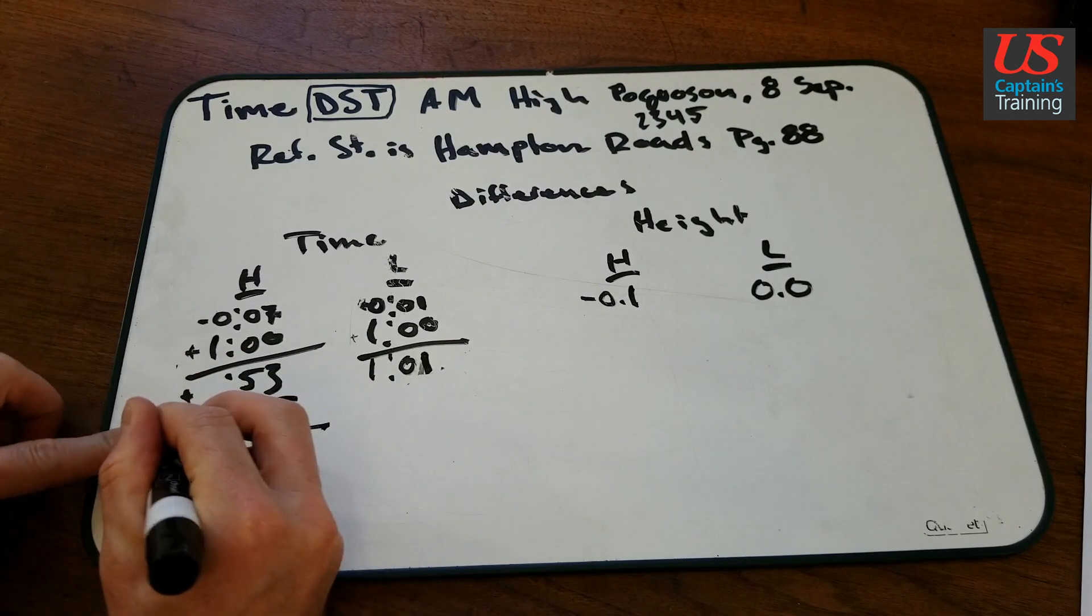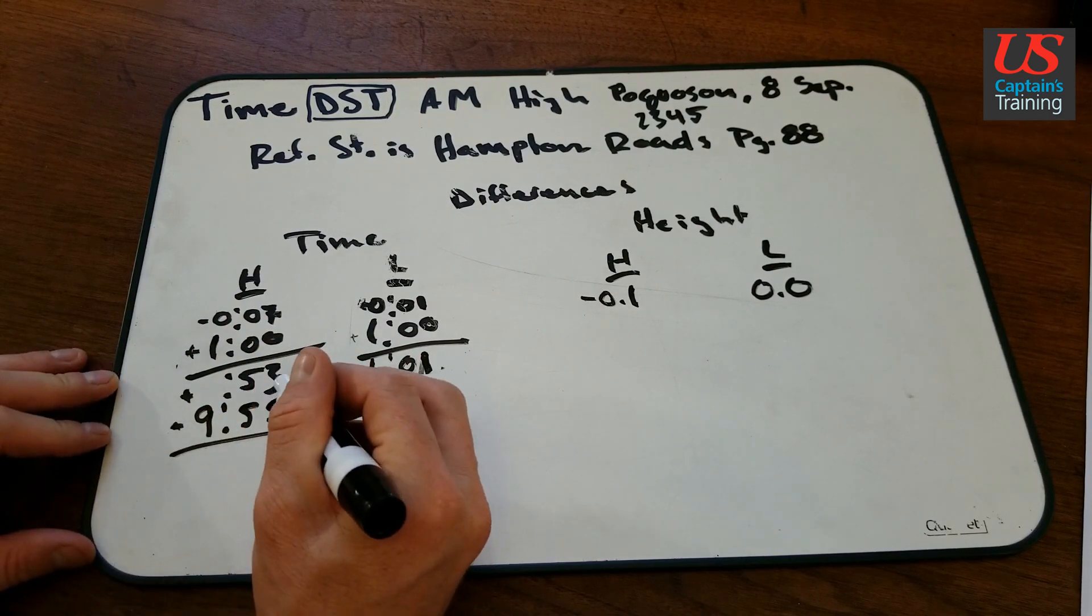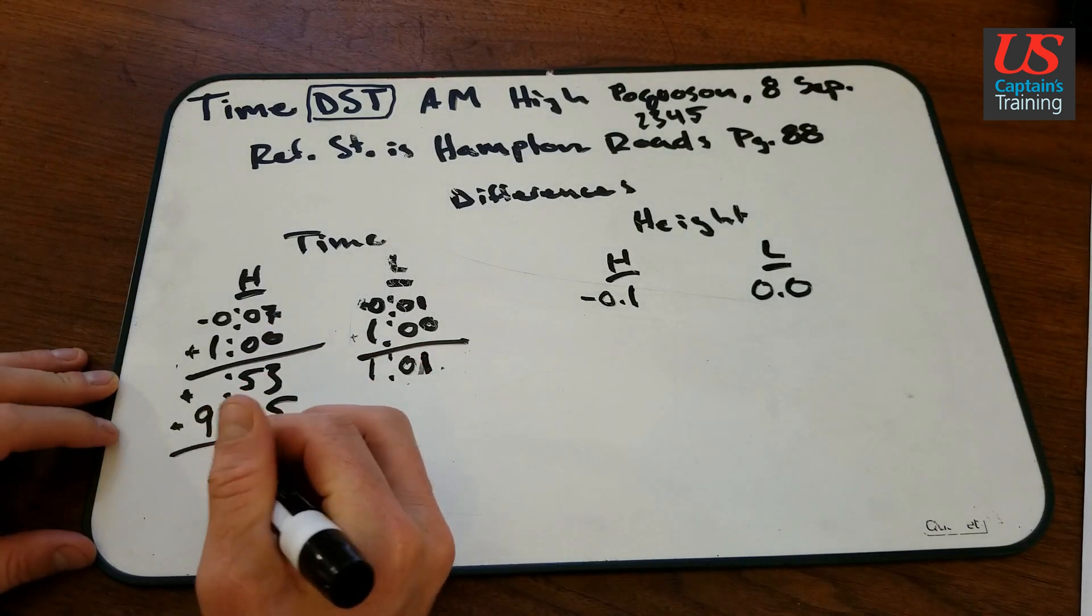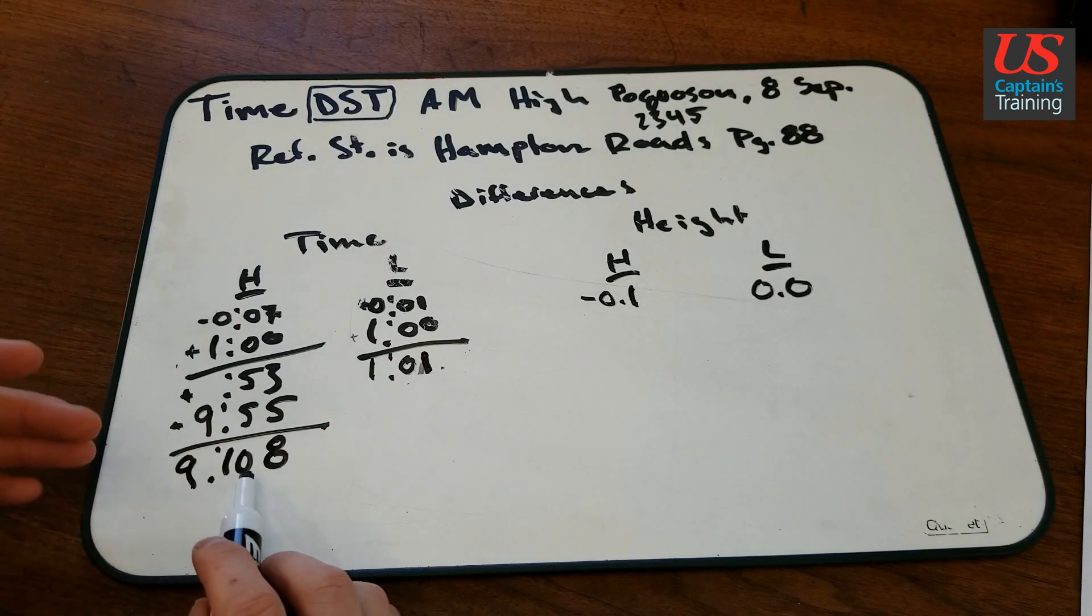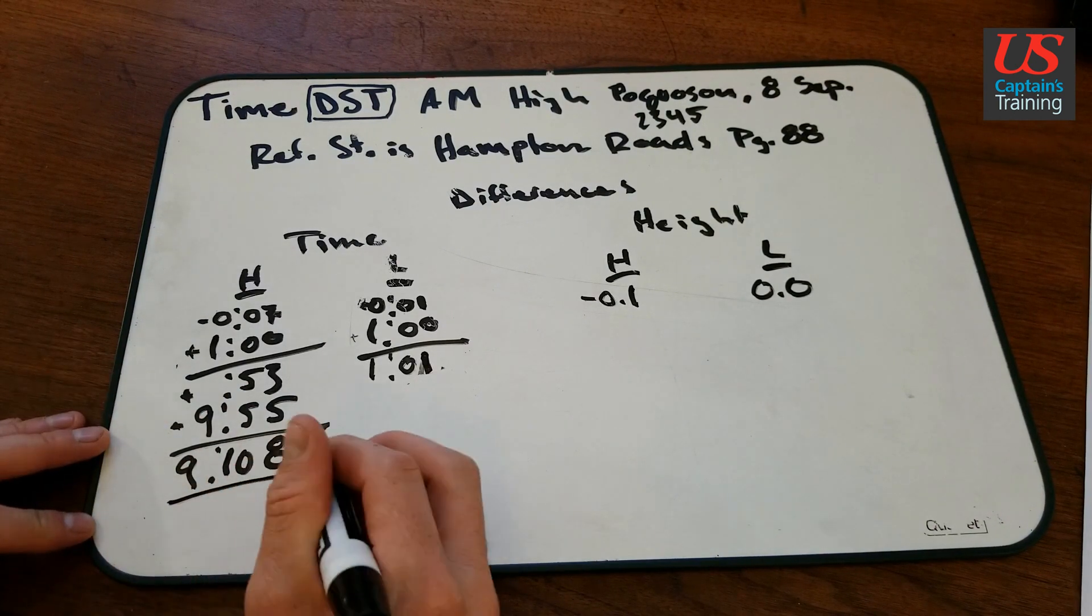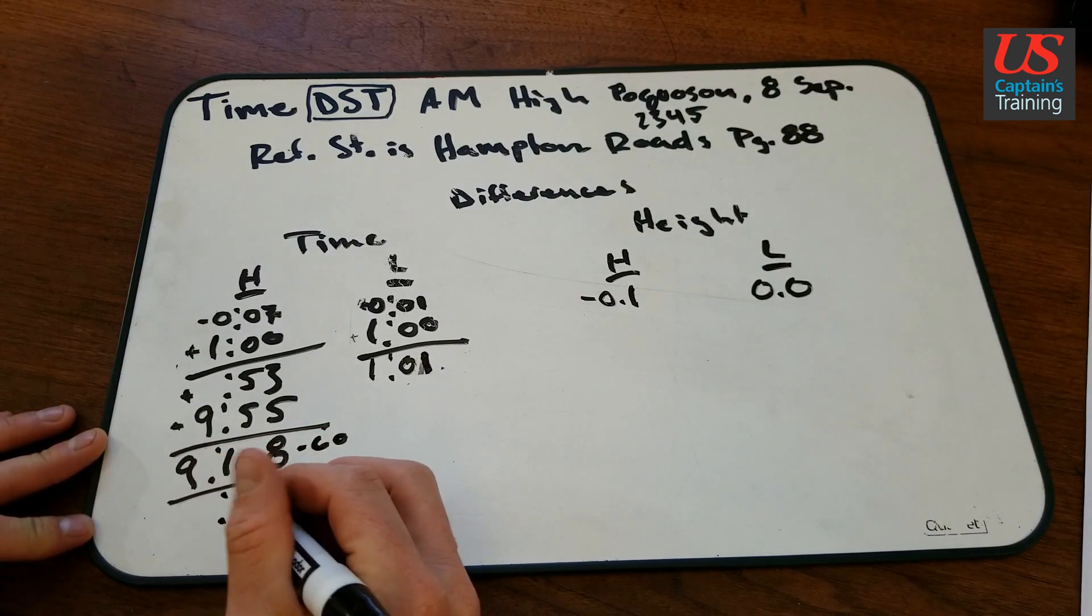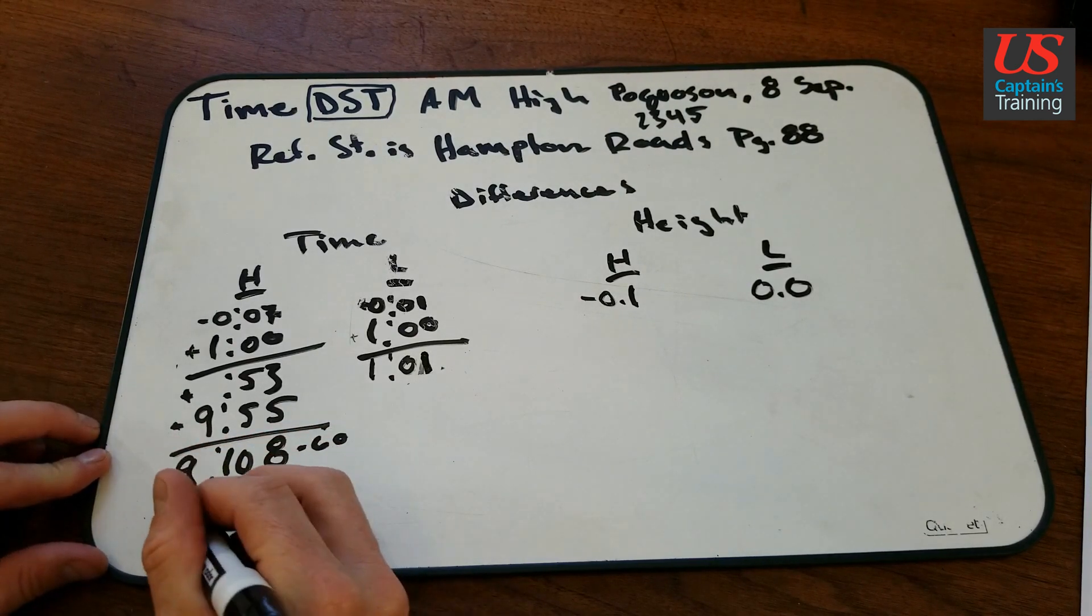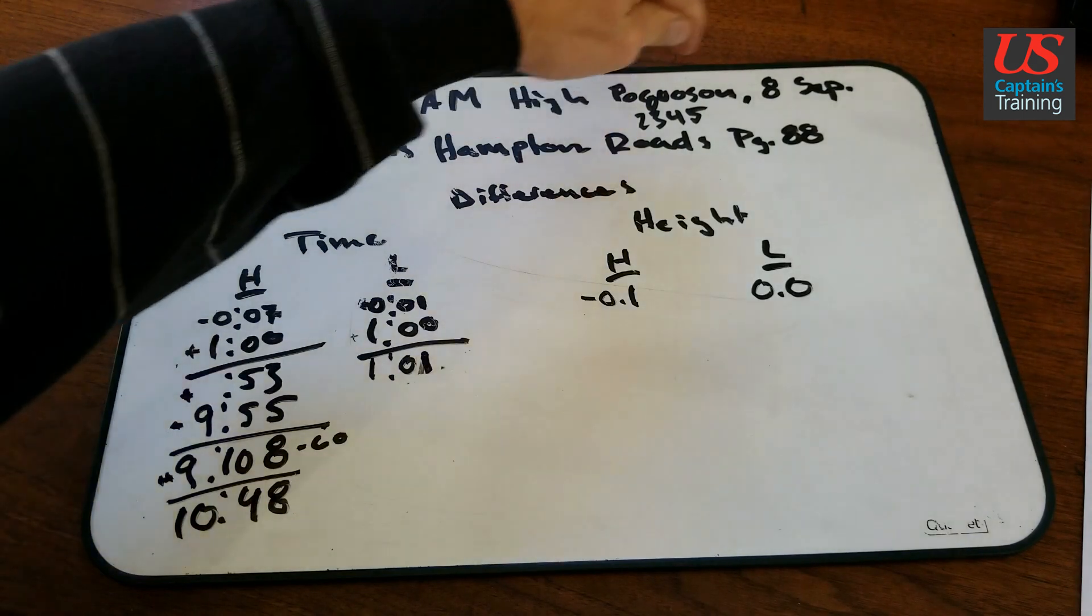So we add these. So it's a positive 53. I always just add them and then convert the minutes. So 3 and 5 is 8. 5 and 5 is 108 minutes. But there can never be 108 minutes, right? We need to take 60 minutes out, turn it into an hour, and see what we're left with. So if you take 60 out of there, you end up with 48 minutes. And then 1 hour, add an hour right here. 10:48 is the time, daylight savings, of the AM high, Pocosin River, 8th September.